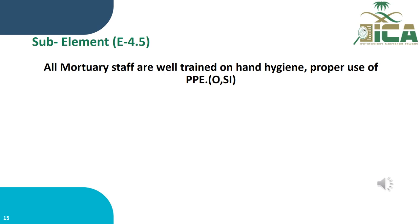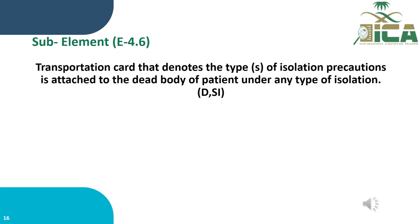Sub-Element E.4.5: All mortuary staff are well trained on hand hygiene and proper use of PPEs. This is assessed by observation and staff interview. Sub-Element E.4.6: A transportation card that denotes the type of isolation precaution is attached to the dead body of a patient under any type of isolation. This is assessed by documentation and staff interview.